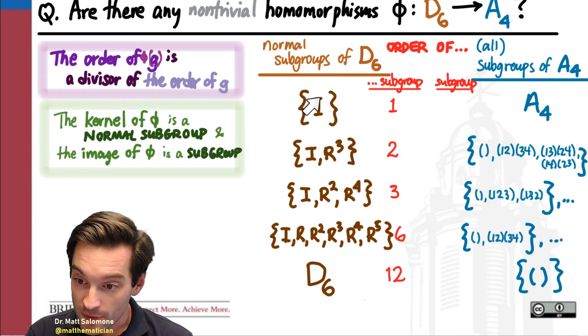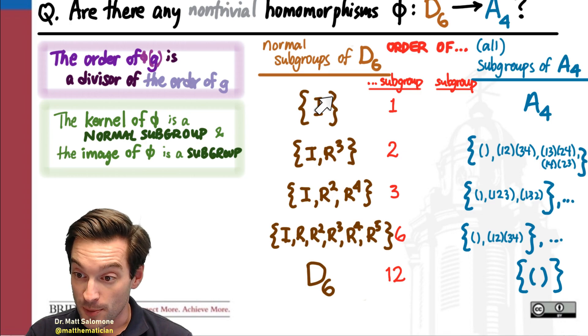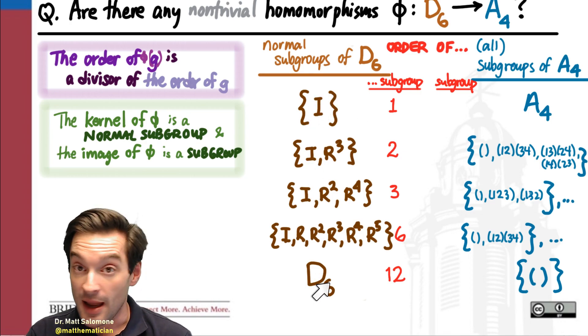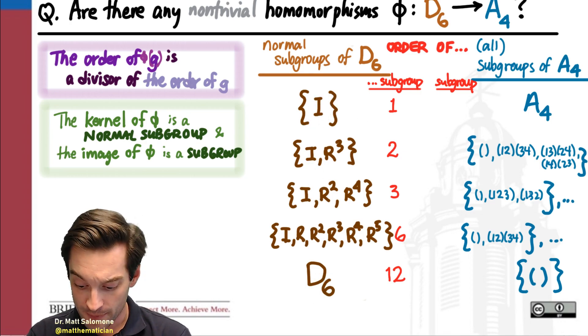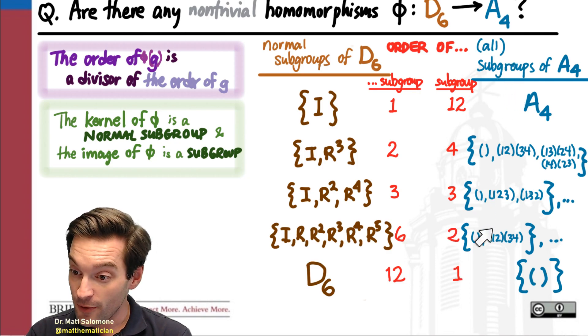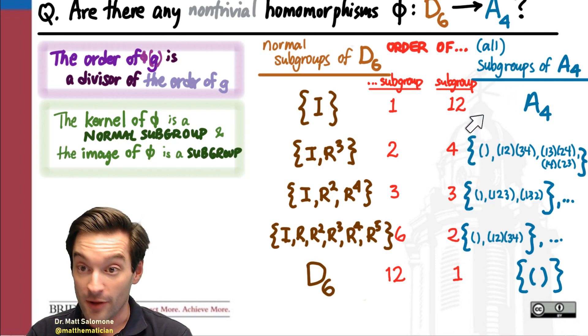The orders of these normal subgroups in D6 are respectively 1, 2, 3, 6, and 12. Meanwhile, the orders of all of the subgroups in A4 are 1, 2, 3, 4, and 12. So how are these related to one another?